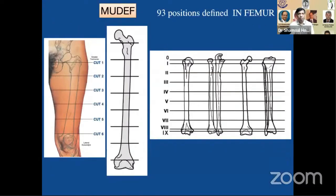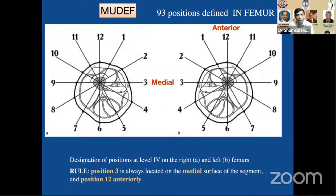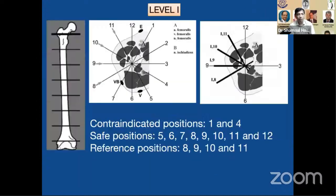I additionally use the Mudev method, where the bone is divided into eight to ten sections — for the femur we use eight sections. Using a clockwise diagram, 12 o'clock is always anterior whether right or left, and 3 o'clock is always medial. You can dramatically specify which area is safe. At level one, contraindicated positions are 1 and 4; very safe positions are 8, 9, 10, and 11. If you are expert you can apply wires from 12 to 6, or positions like 11 to 5.